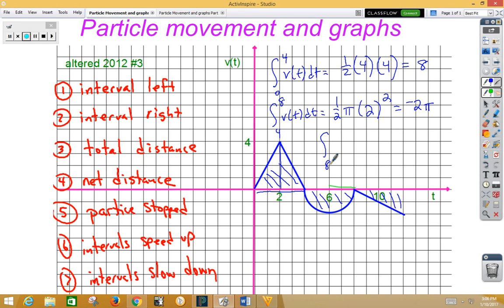Our third area is going to be from 8 to 12 of velocity dt. Again, that's going to be a triangle. We're going to go half of the base, which is 4, times the height, which is 2. So that's going to give us 4, but it's going to be negative area again because we're below the x-axis.